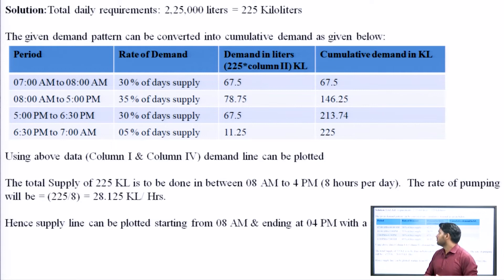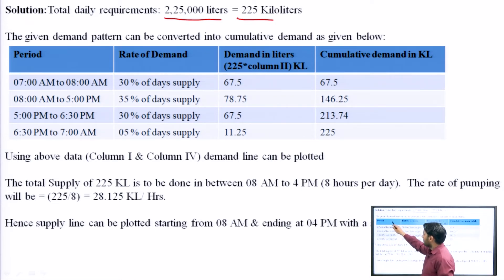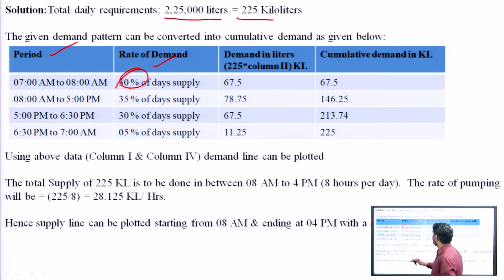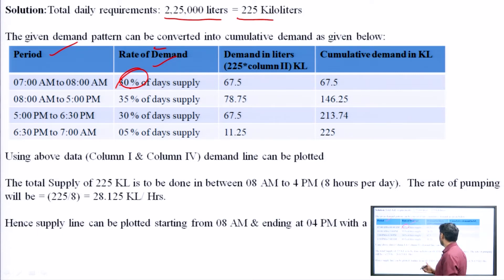First we need cumulative demand values. The total requirement is 2,25,000 liters, which equals 225 kiloliters. With the given time periods and percentage rates of demand, we calculate demand in kiloliters by multiplying: 225 × 0.30 = 67.5 KL for the first period; 225 × 0.35 for the next; then 225 × 0.30 and 225 × 0.05. This gives us demand values in kiloliters for each period.